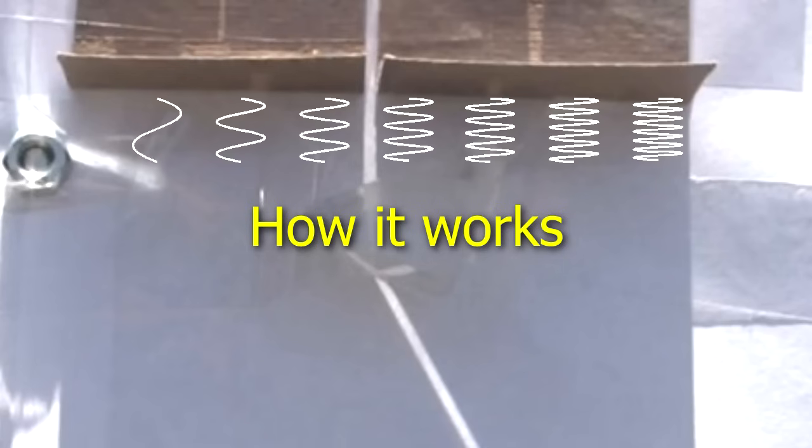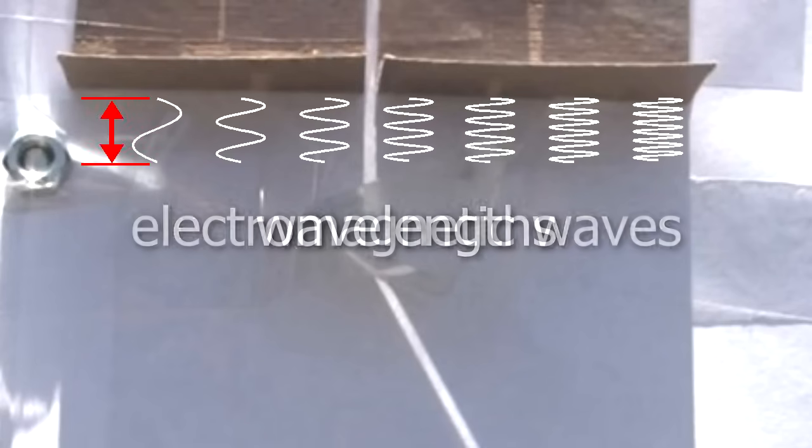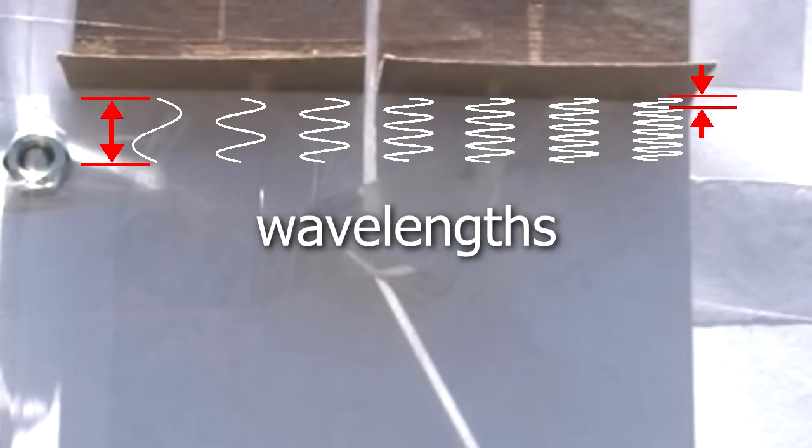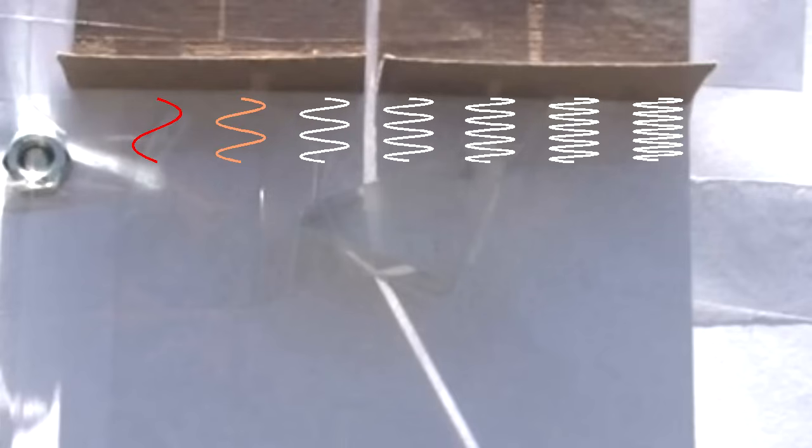How does it work? Visible light is made up of multiple electromagnetic waves with different wavelengths. Those wavelengths represent different colors: red, orange, yellow, green, blue, indigo, and violet.